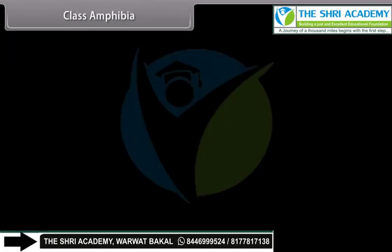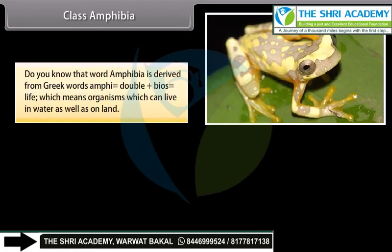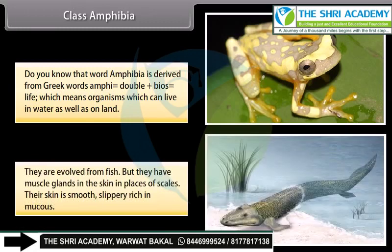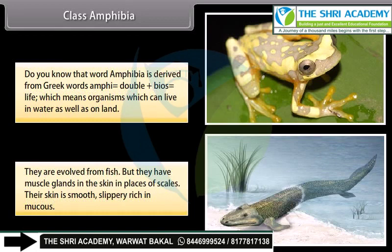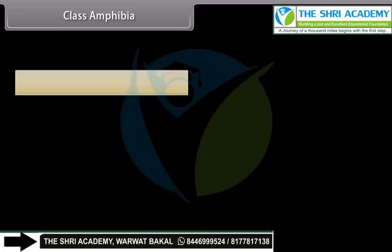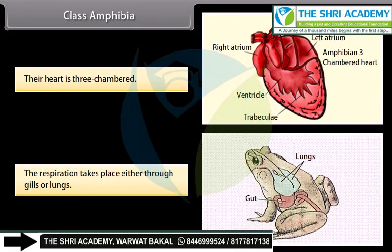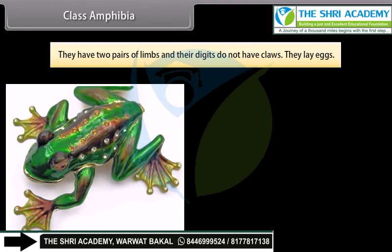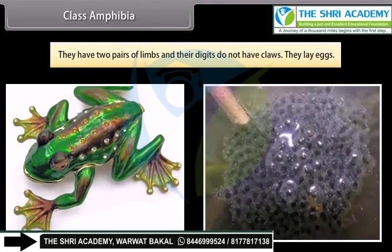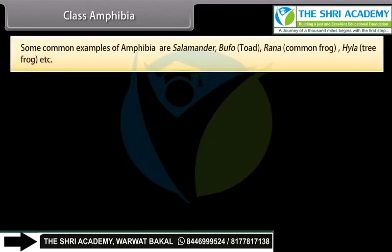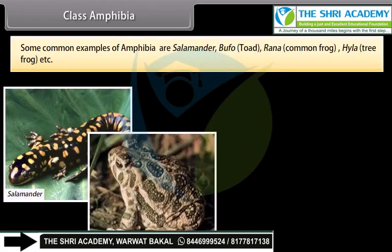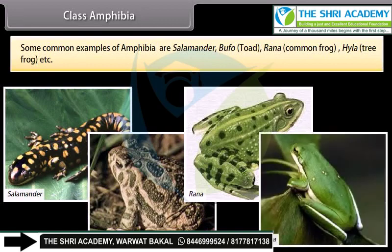Class Amphibia. The word Amphibia is derived from Greek words: amphi, meaning double, plus bios, meaning life — which means organisms which can live in water as well as on land. They are evolved from fish, but have mucus glands in the skin instead of scales. Their skin is smooth, slippery, and rich in mucus. Their heart is three-chambered. Respiration takes place either through gills or lungs. They have two pairs of limbs and their digits do not have claws. They lay eggs. Common examples are Salamander, Bufo (toad), Rana (common frog), and Hyla (tree frog).